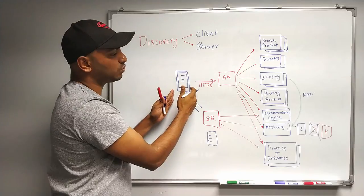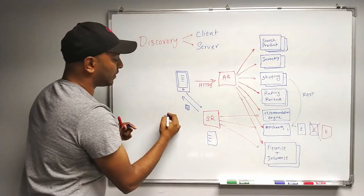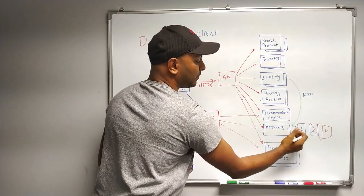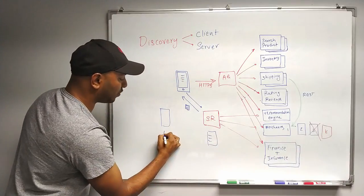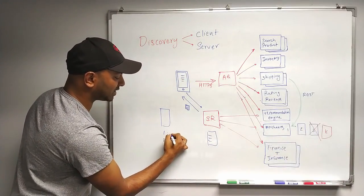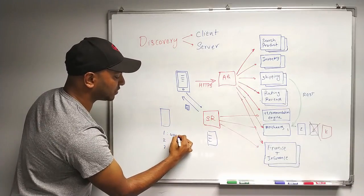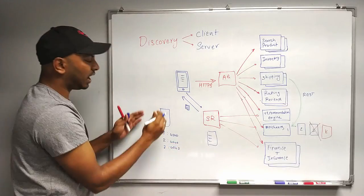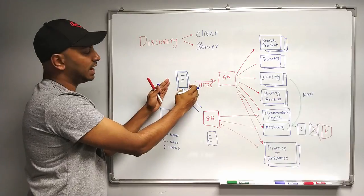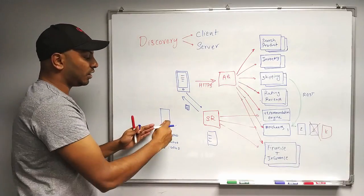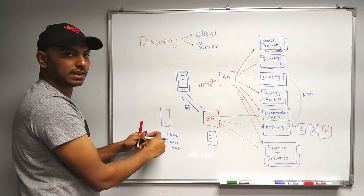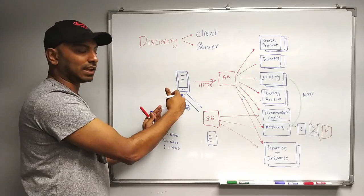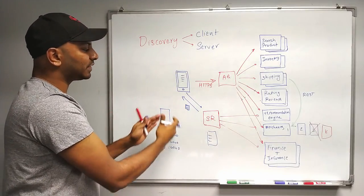For example, if this client wants to talk to the merchants microservice, it asks the service registry: give me the list of merchants. In this case, we have three instances, so we have three addresses — IP one, IP two, IP three — with their respective ports, say running on port 4040. This list is with the client, and the client can do load balancing as well. On the first request, it might talk to one instance, and on the second request, it might talk to another — load balancing on the client side is possible.